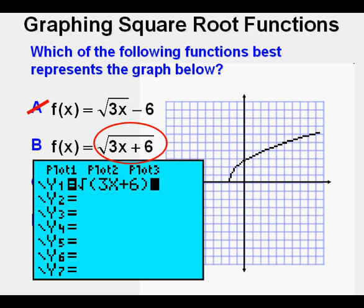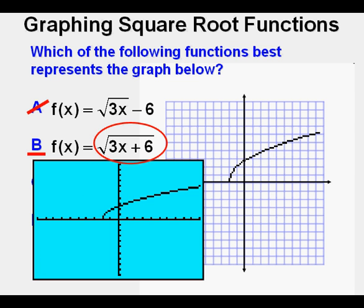Next we enter answer B, the square root of 3x plus 6, under the square root sign. Then we graph it by pressing graph. This one looks quite a bit like the graph, starting at the same place. So we can underline it while we take a look at the other answers. And here is answer C, graphed, definitely not the right answer. And here is answer choice D, graphed, also not the right answer. We are now sure B is the correct answer, and we circle it as correct.